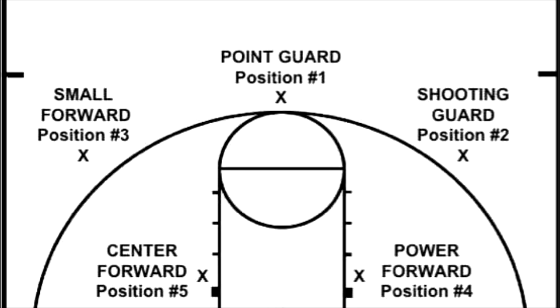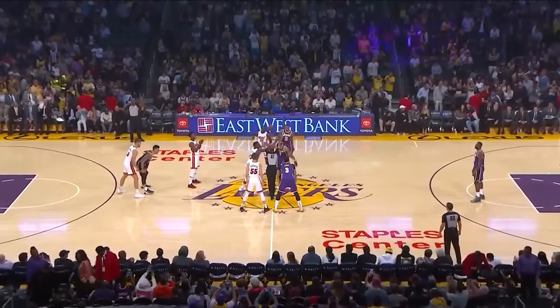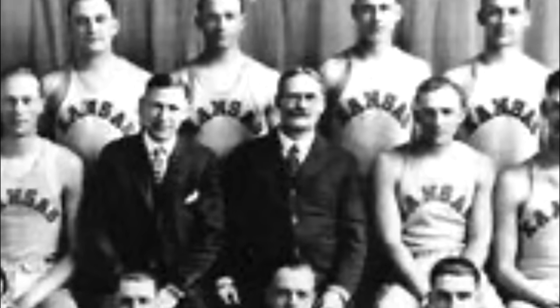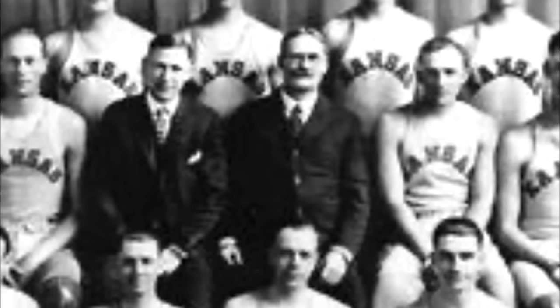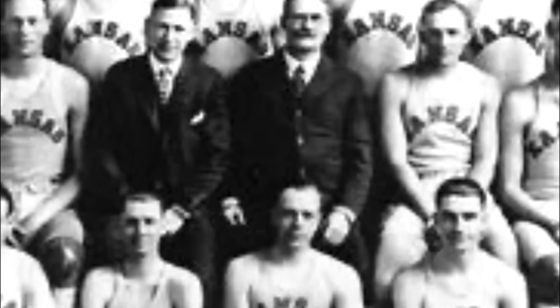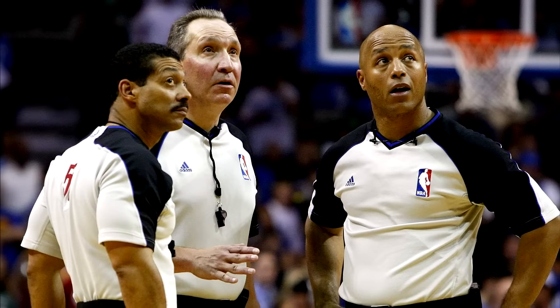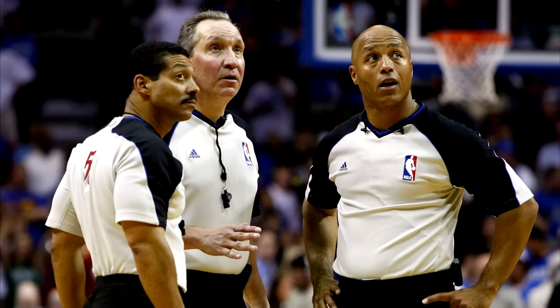Then we talked about the most important part of the game and what makes the game go — the players and their positions. And before that big orange thing goes up in the air, we have to talk about the rules. We touched on the rules briefly in the history of basketball, but those rules are a lot different now. I need to explain a few more small details that as a fan or a beginner you wouldn't really pay attention to.